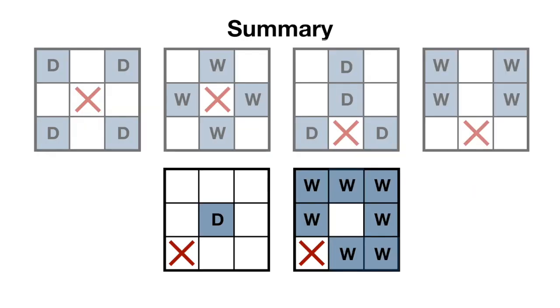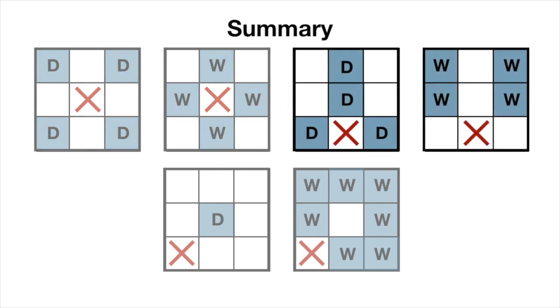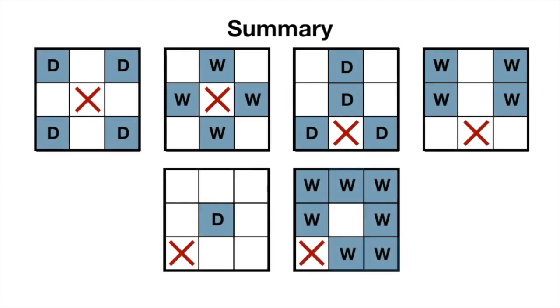In summary, you should probably start the game by claiming a corner square. If the opponent knows how to stop that trick, then start with the center. Only start with an edge square if you want to live dangerously. Take your time and have fun.